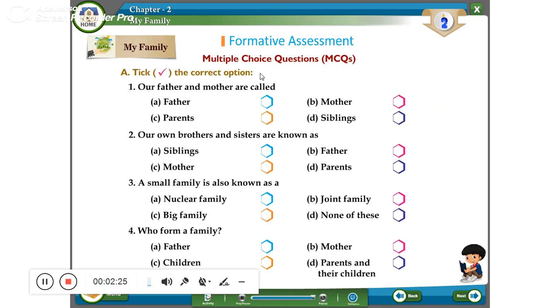Multiple choice question. Let us take the correct one. Our father and mother are called parents. Our own brothers and sisters are called siblings. A small family is also called as a nuclear family.